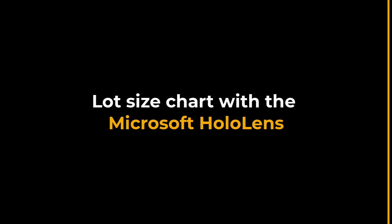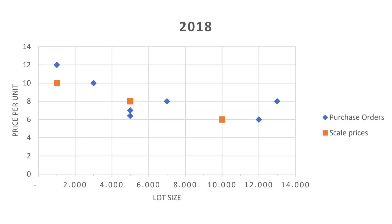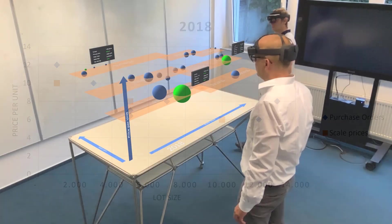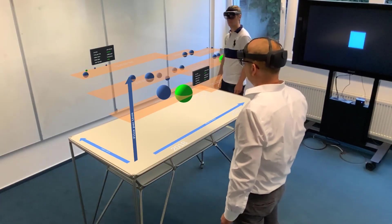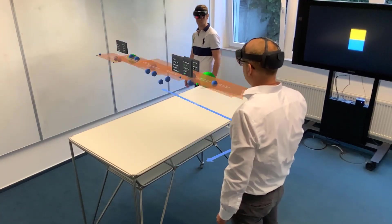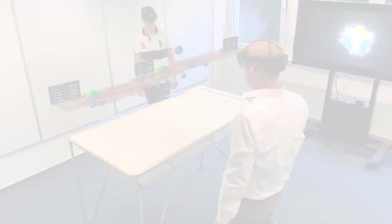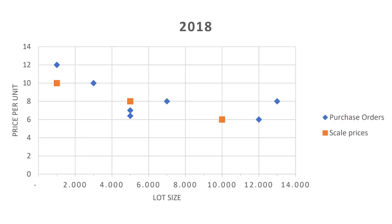This is a lot size chart demo with the Microsoft HoloLens, a project by SAP and Siemens. In this video we show how the current lot size chart can be shown in the HoloLens. The purpose of this chart is to detect deviations in purchase orders and scale prices.